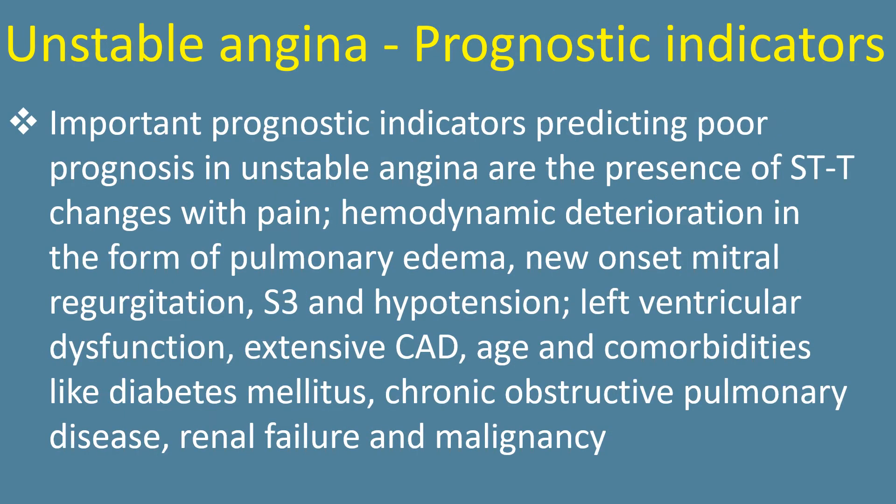Important prognostic predictors predicting poor prognosis in unstable angina are the presence of ST-T changes with pain, hemodynamic deterioration in the form of pulmonary edema, new onset mitral regurgitation, diaphoresis and hypotension, left ventricular dysfunction, extensive CAD, age, and co-morbidities like diabetes mellitus, chronic obstructive pulmonary disease, renal failure, and malignancy.